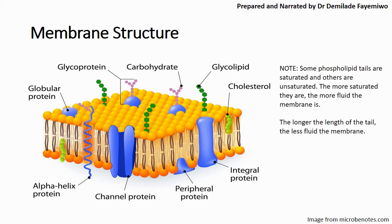This is a neater image of the fluid mosaic model showing very clearly the different types of proteins within the cell membrane. Phospholipid tails can be saturated or unsaturated, and the longer the length of the tail, the less fluid the membrane — but that is not usually a question that pops up in your CAIE exams. What you do need to know are the important parts of the cell membrane.